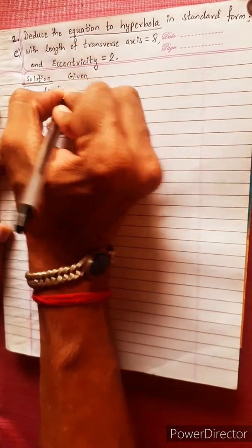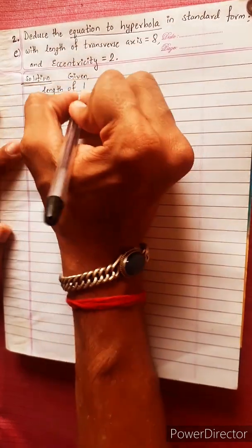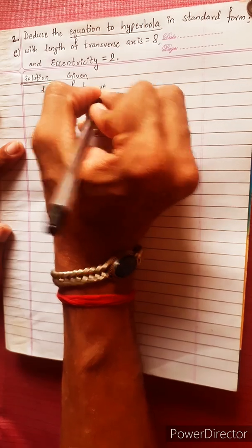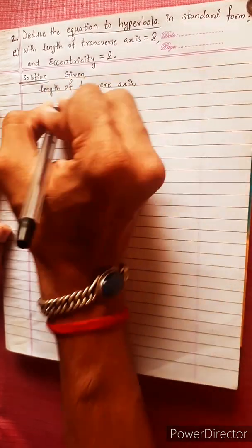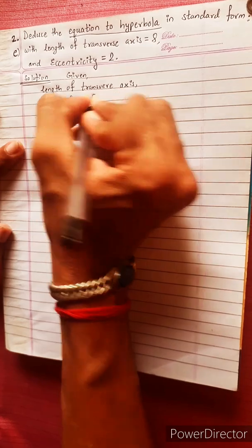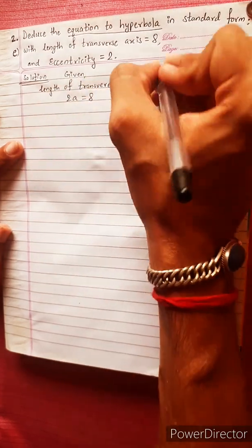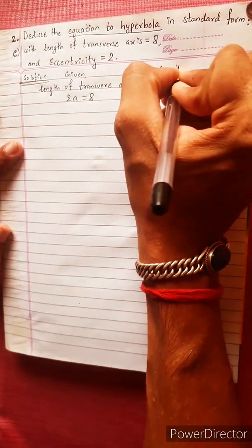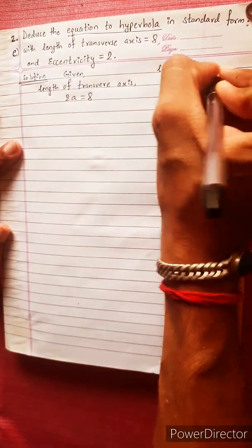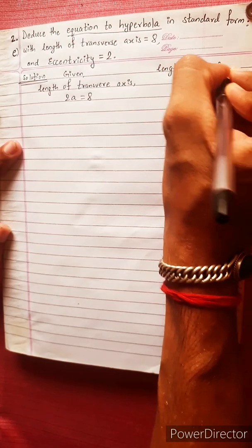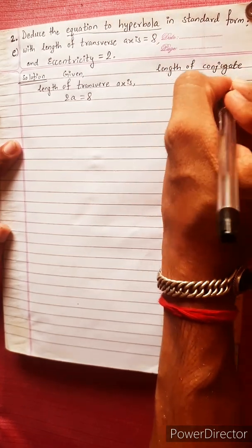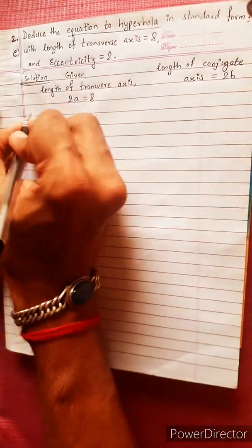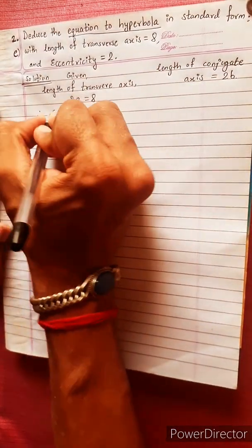Length of transverse axis. The transverse axis: 2a is equal to 8. The length of conjugate axis. Length of transverse axis: 2a. Therefore, a is equal to 4.